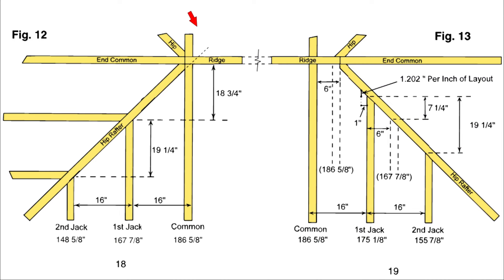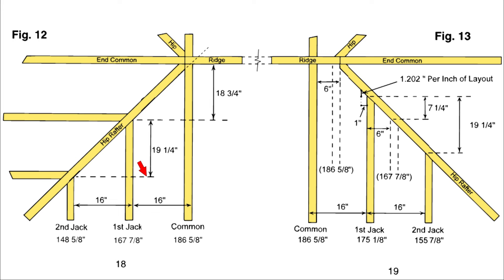Let's talk about jack rafter lengths, using figures 12 and 13 from Roof Framers Bible, pages 18 and 19. We start with the common rafter at 186 and 5/8 inches. To get the long point of the first jack for an 8/12 roof, we deduct 18 and 3/4 inches. To get the second jack, we deduct the jack difference, which is 19 and a quarter inches. This continues down the hip. Note that this is an actual rafter length measured along the top of the jack rafter, not a run number.